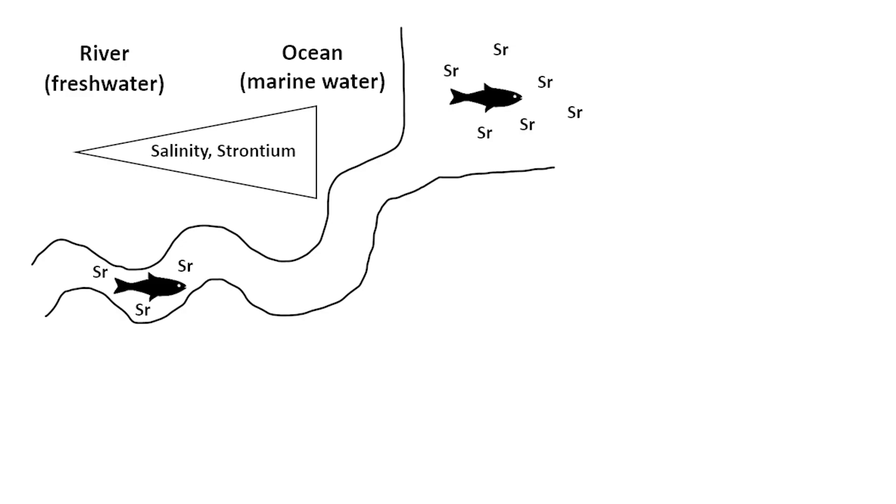Freshwater and marine water have very different chemical composition, so if they really lived in different environments we might be able to tell based on the chemical composition of their scales.